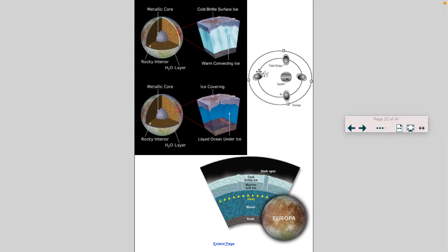Jupiter has over 63 moons, but there is one called Europa. It is covered in ice, and it's not solid all the way through because of tidal pressures from Jupiter. So we have a cold, brutal ice layer on top, then warmer soft ice, and there's heat in the center of Europa because of those tidal pressures. As a result, we theoretically think there's an ocean there, and if there's water, that's a good indicator that life could exist. When we study archaea and bacteria, we're trying to apply it outside of Earth — maybe that is the form of life we could discover elsewhere.